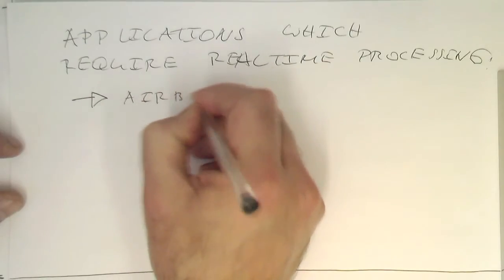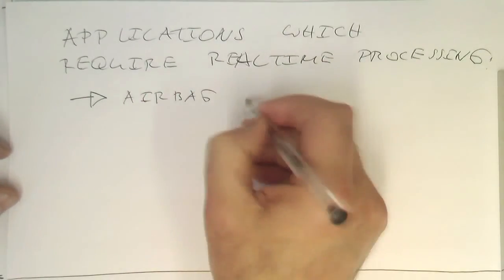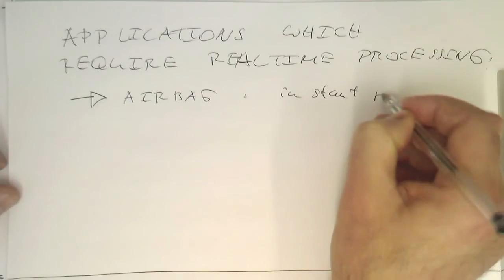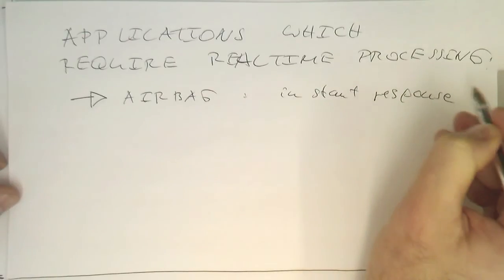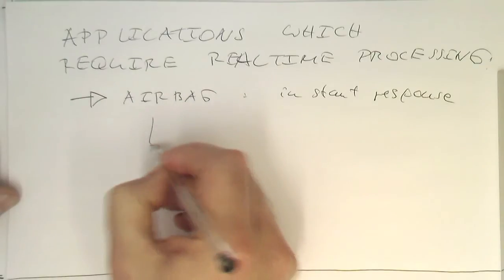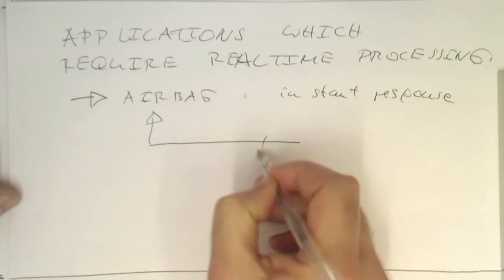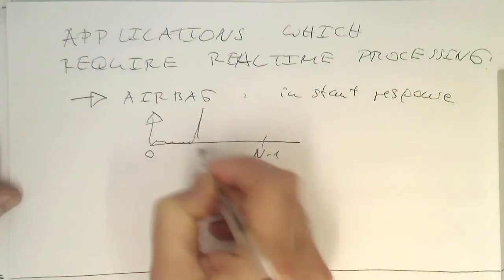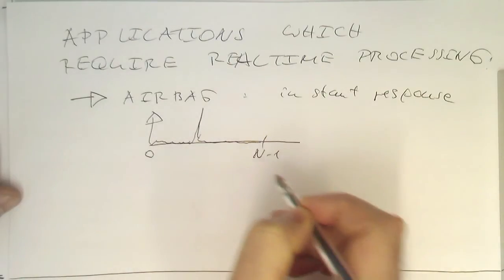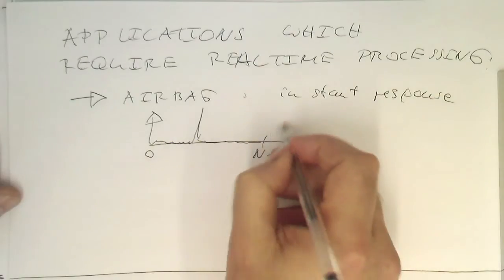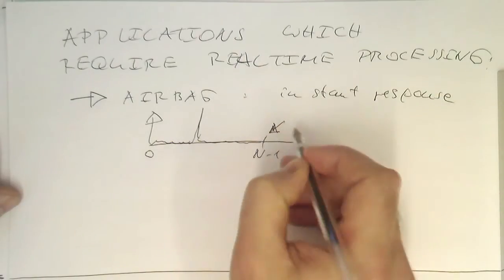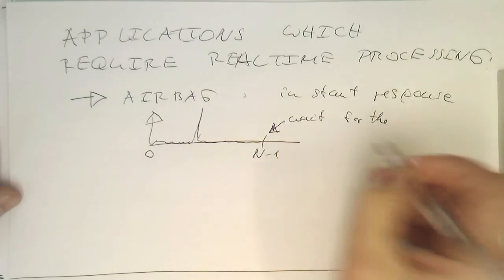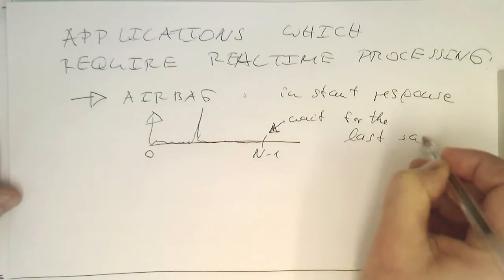So you would like to have instant response. However, if you think of the Fourier transform, the Fourier transform needs the whole signal from 0 to n. So imagine there's our bang here. Then this goes further here, and we're doing a Fourier transform of that. So we need to wait until the last sample has come in.